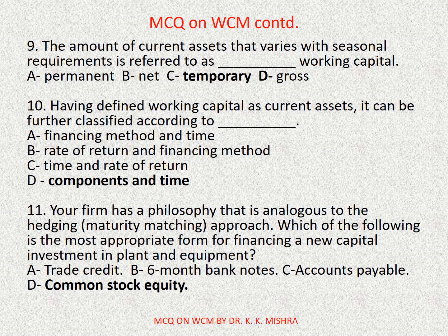Question number eleven: your firm has a philosophy analogous to the hedging approach — which of the following is the most appropriate form of financing a new capital investment in plant and equipment? Options are: A) Trade credit, B) Six-month bank notes, C) Accounts payable, D) Common stock equity. Correct option is D: Common stock equity.